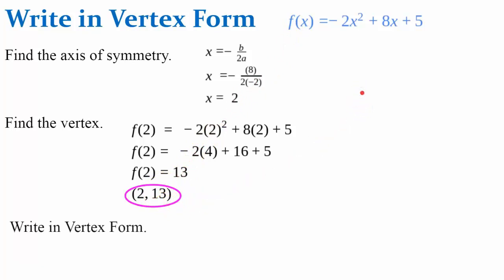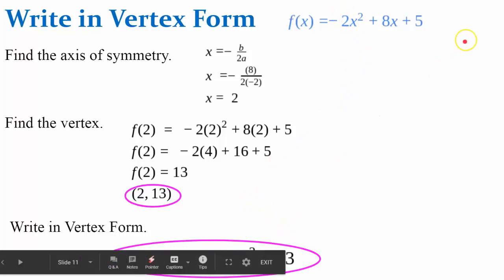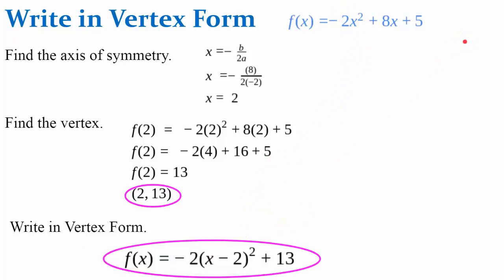Write this in vertex form. A is still negative 2. And here's the input of my vertex. So negative 2 times the quantity (x - 2) squared plus 13. I hope you enjoyed the lesson today.